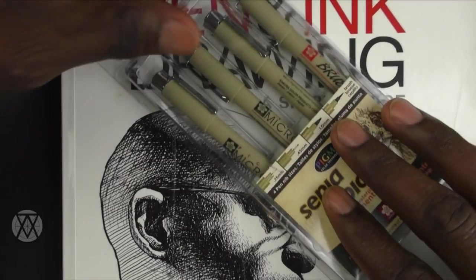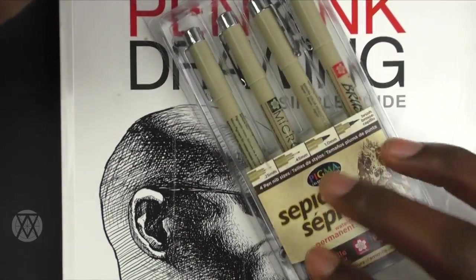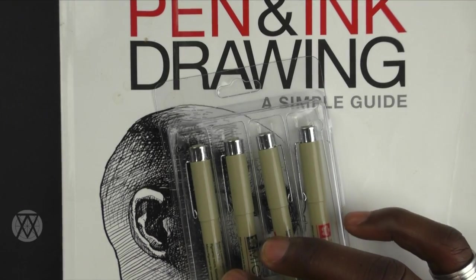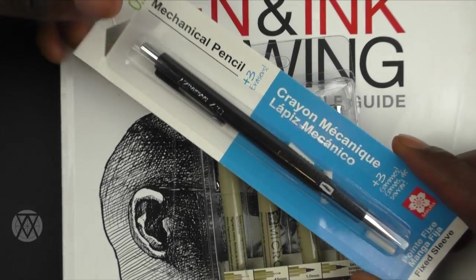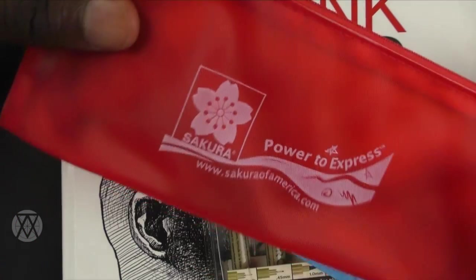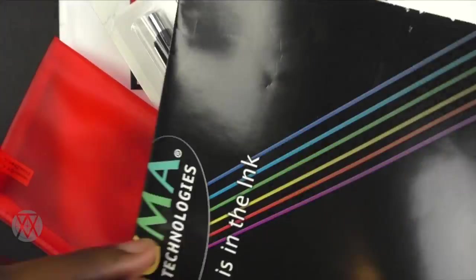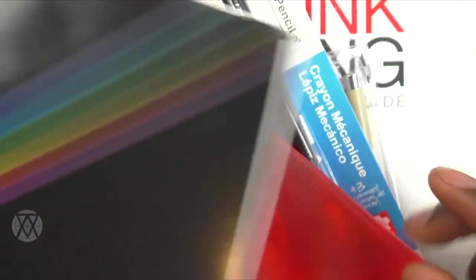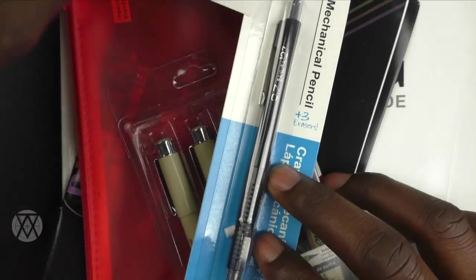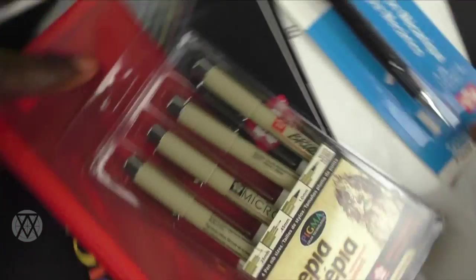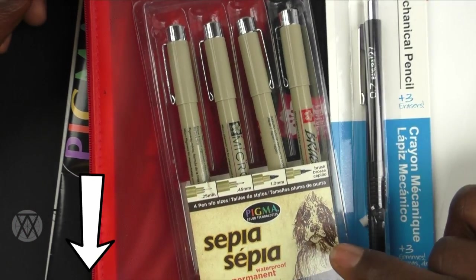And in addition to that, you'll also get a set of Pigma Microns with four different points, and you will get a Sakura mechanical pencil. And you will also be getting a pencil case. I'll also be sending this little brochure with the set as well. So I guess you can browse other Sakura products, but thanks so much to Sakura for donating these. And I will be sending this nice little package, three sets like this, to the three lucky winners.